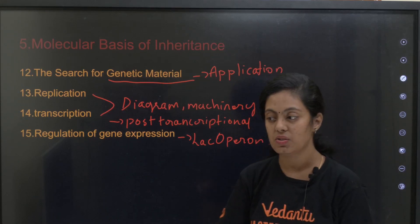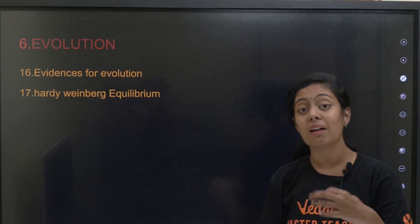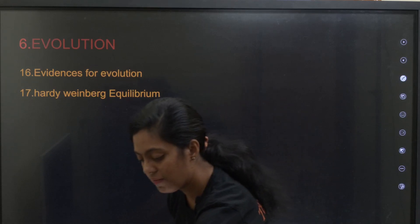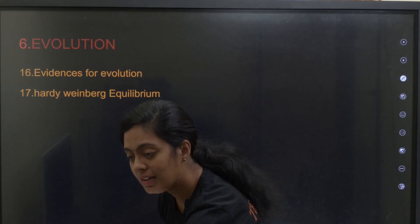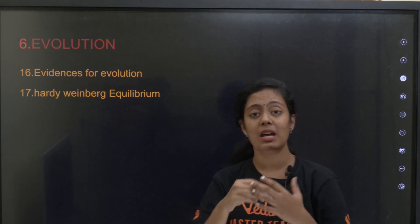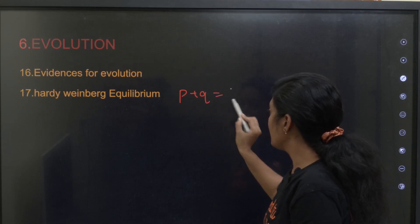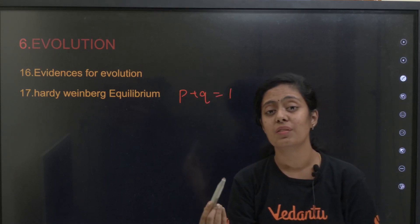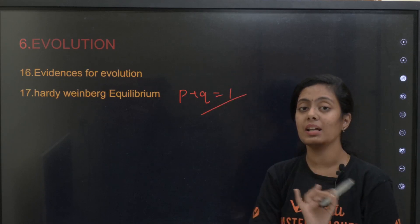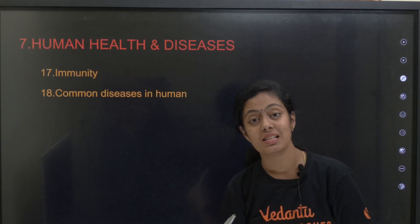Next we will look at evolution. The evidences of evolution — paleontological evidence, morphological evidence — are all very important. Then you have Hardy-Weinberg equilibrium, where you study that p plus q equals one: the allelic frequency of the dominant allele plus the allelic frequency of the recessive allele equals one. This is very very important.